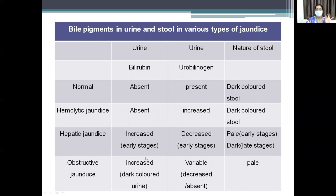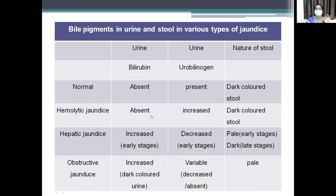In obstructive jaundice, urine is dark-colored and urobilinogen is variably decreased or absent. The stool is pale because stercobilinogen — which gives color to the stool — is not present in obstructive jaundice. Remember that the liver is essential for conjugation of bilirubin. In obstructive jaundice, stercobilinogen is absent, which is why stools are pale.